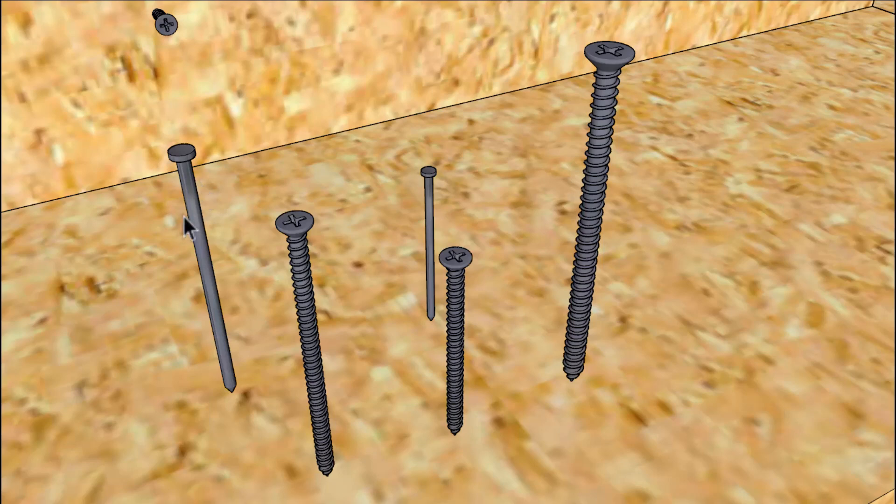I used to use 16D nails for inch and an eighth treads, or I would use a 7D or an 8D hot dipped or ring shank nail for three quarter inch or five eighths OSB or plywood.